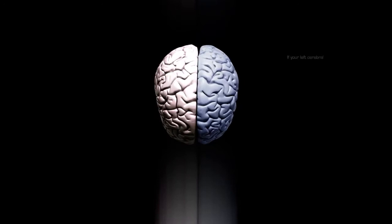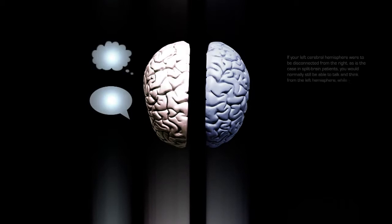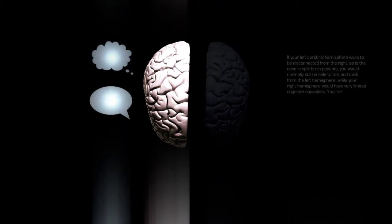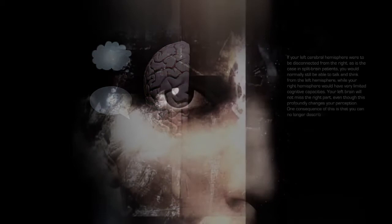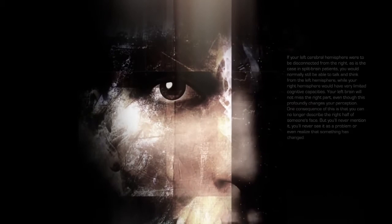If your left cerebral hemisphere were to be disconnected from the right, as is the case in split brain patients, you would normally still be able to talk and think from the left hemisphere, while your right hemisphere would have very limited cognitive capacities. Your left brain will not miss the right part, even though this profoundly changes your perception. One consequence of this is that you can no longer describe the right half of someone's face, but you will never mention it. You will never see it as a problem or even realize that something has changed.